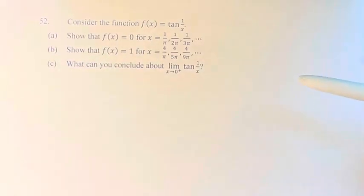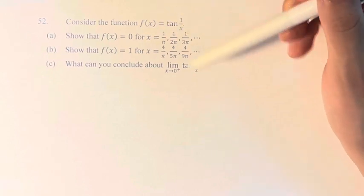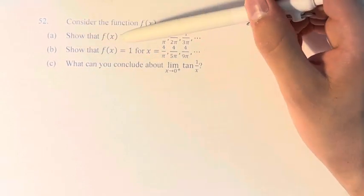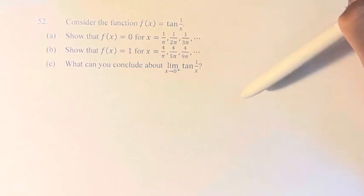Hello and welcome back to another video. In this problem, we're asked to consider the function f(x) = tan(1/x). We're asked to show that f(x) = 0 for x = 1/π, 1/2π, 1/3π, and so on.